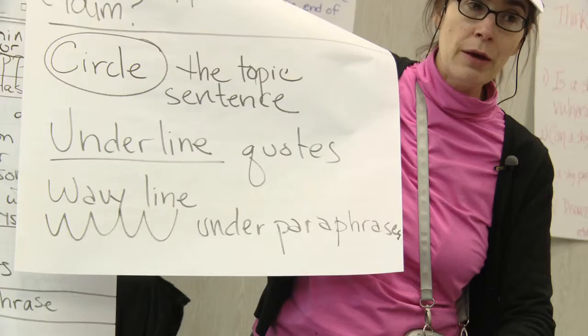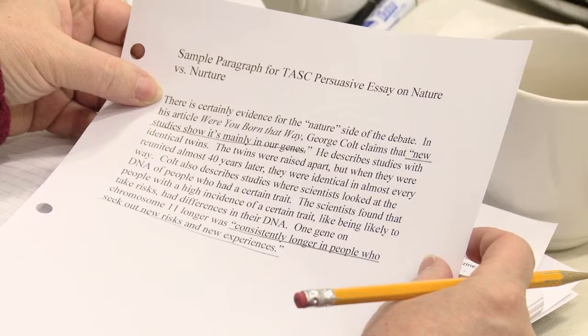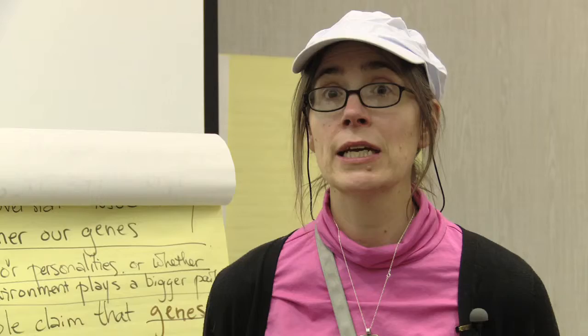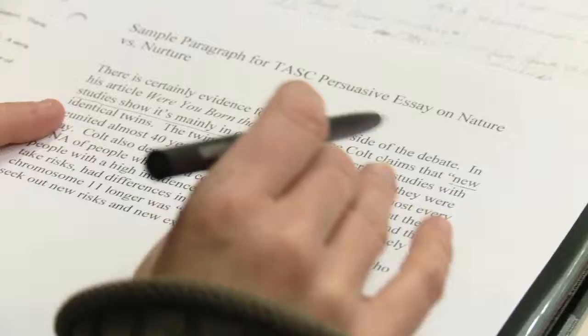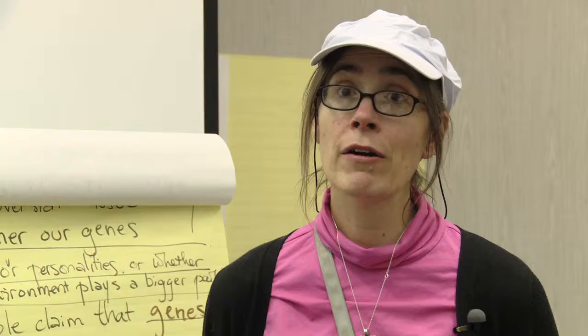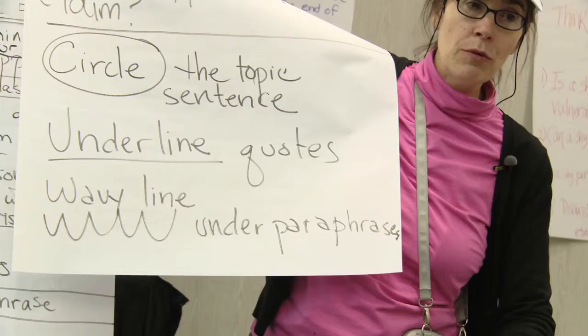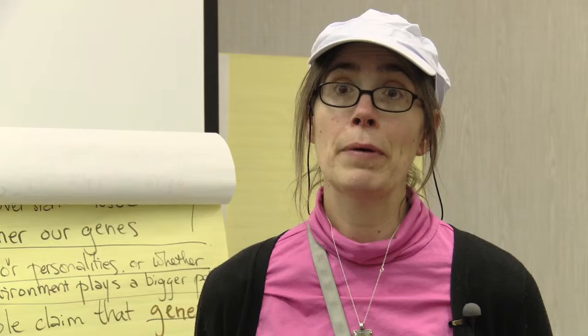And now you get to read the sample paragraph. I want you to circle the topic sentence, underline the quotes, put a wavy line under the paraphrases. We looked at a sample paragraph that I had written because I really wanted teachers to see how a teacher-written model can help students. What I do with a teacher-written model is give the students some discussion questions that call their attention to different elements. In this sample paragraph, I wanted to call their attention to the topic sentence, the quotes, and the paraphrases.